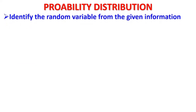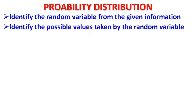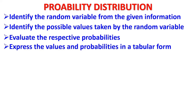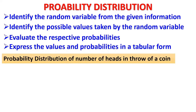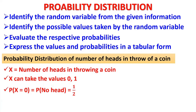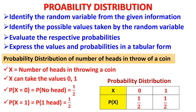To construct a probability distribution: identify the random variable — for example, number of red balls, number of king cards, number of sixes, number of heads, or number of tails. Then identify the possible values taken by the random variable, starting from 0, 1, 2, 3, and so on. Evaluate the respective probabilities individually and express the values and probabilities in a tabular form. This is called the probability distribution, as it shows how the total probability of 1 is distributed among all values of the random variable.